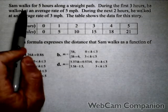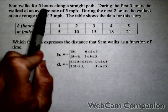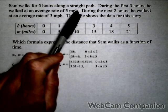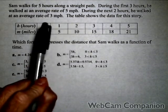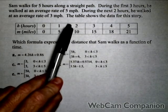In this video, we're trying to figure out and model Sam's walk. He walks for a total of five hours along a straight path. During the first three hours, he walked at an average rate of five miles per hour. During the next two hours, he walked at an average rate of three miles per hour.